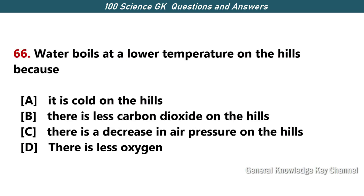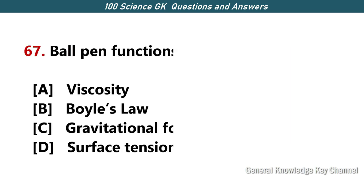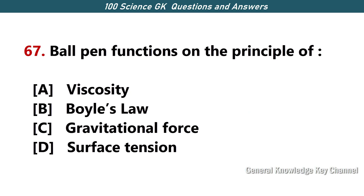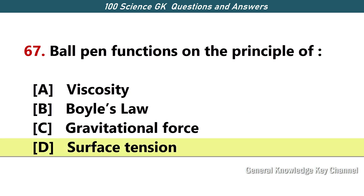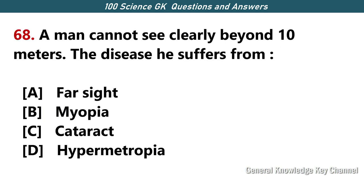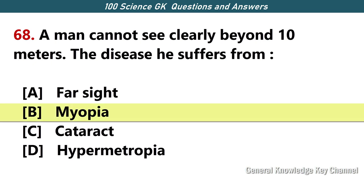Water boils at a lower temperature on the hills because — Answer C — there is a decrease in air pressure on the hills. A ballpen functions on the principle of — Answer D — surface tension. A man cannot see clearly beyond 10 meters; the disease he suffers from — Answer B — myopia.